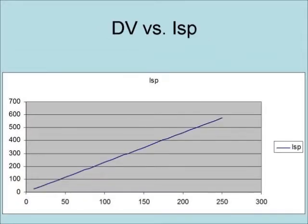However, when the rocket formula is graphed with regards to specific impulse, the line is straight. This means that a rocket's efficiency is the most important factor in how fast a rocket can go.